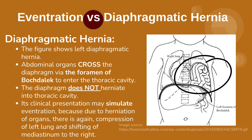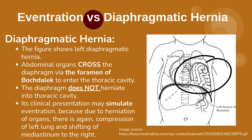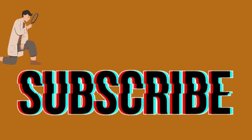Now we will talk about Diaphragmatic Hernia. The figure shows left diaphragmatic hernia. Abdominal organs do cross the diaphragm through the foramen of Bochdalek to enter the thoracic cavity. The diaphragm does not herniate into the thoracic cavity. Its clinical presentation may simulate eventration, because due to herniation of organs, there is again compression of the left lung and shifting of mediastinum to the right.